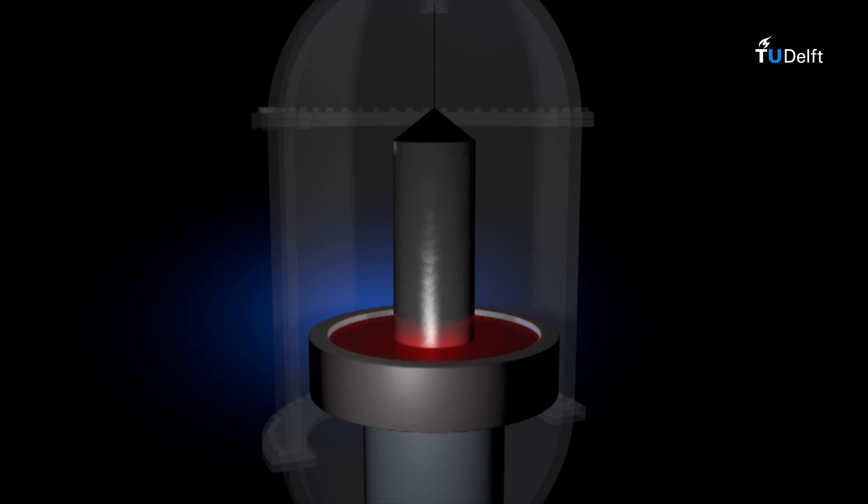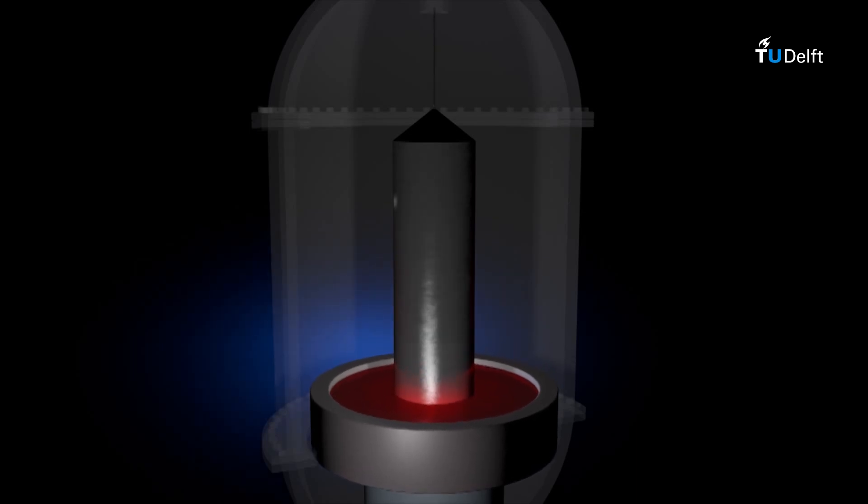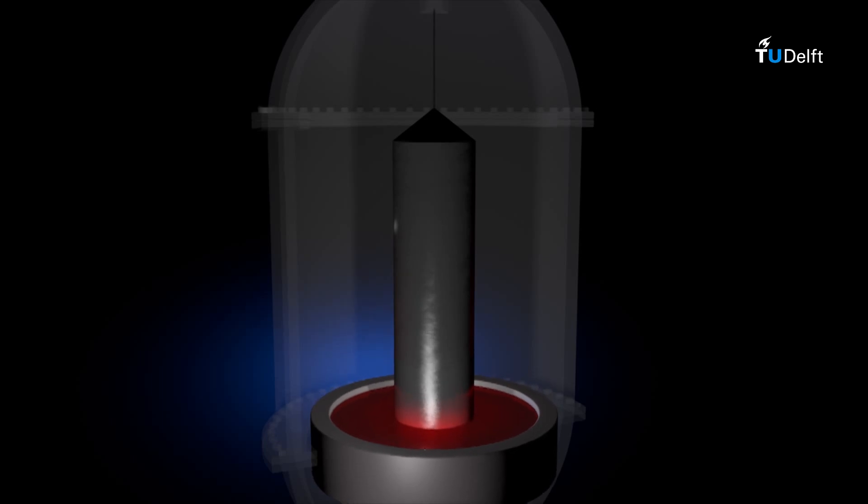To prevent the incorporation of impurities, this process takes place in an inert atmosphere, like argon gas. The crucible is made from quartz, which partly dissolves in the melt as well. Consequently, Czochralski monocrystalline silicon has a relatively high oxygen level.